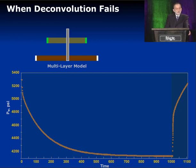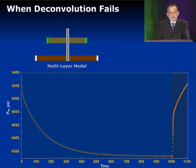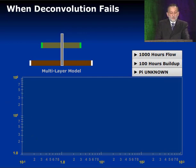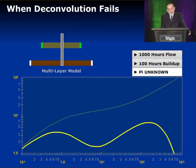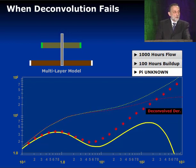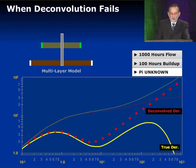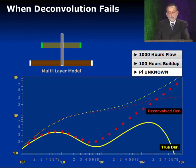Now let's show you where deconvolution fails. For a similar model but with an unknown initial pressure, the resulting deconvolution is completely wrong. This is the same process that worked very well before, but with this particular data set it doesn't work — and yet it looks good. So you don't know it's not working. You've got to be careful how you interpret deconvolved data.